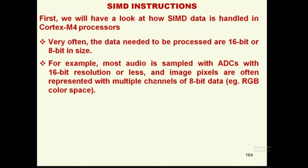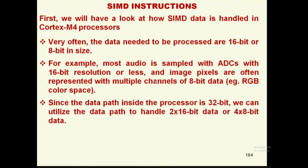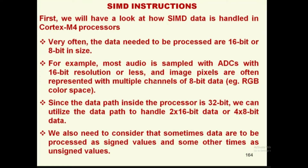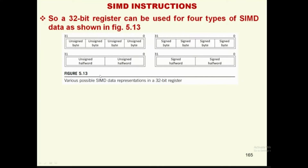The data path inside the processor is 32-bit. We can utilize the data path to handle two 16-bit data values or four 8-bit data values simultaneously. By efficiently utilizing the 32-bit data path as two 16-bit or four 8-bit paths, it is possible to perform single instruction multiple data operations. We also need to consider that data may need to be processed as signed or unsigned values. Figure 5.13 shows the various possible SIMD data representations in a 32-bit register.